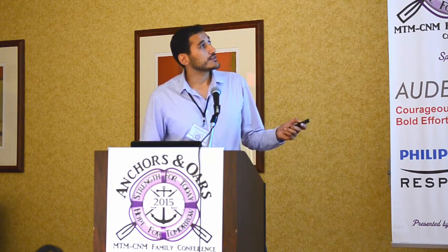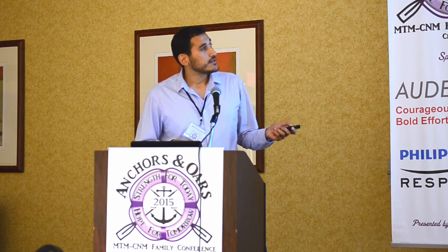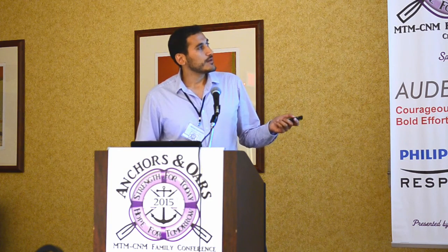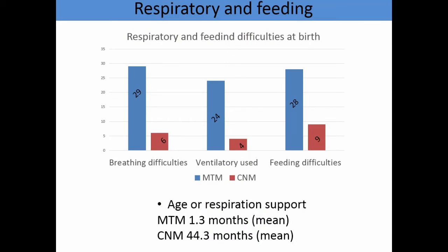Looking at respiratory and feeding parameters: in the MTM group, all patients had breathing difficulties at birth. Ventilatory support was used in 24 of them, and feeding difficulties occurred in 28 of the 29 patients. There is also a significant difference between the two groups regarding the necessity of respiratory support: in MTM it was at 1.3 months compared to central nuclear myopathies at 44 months.